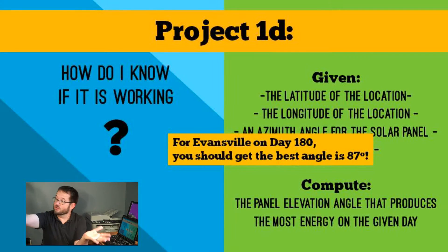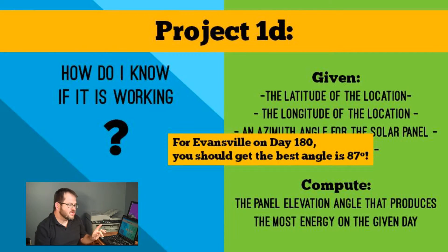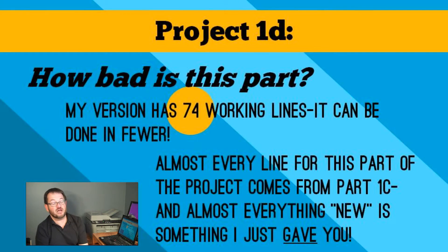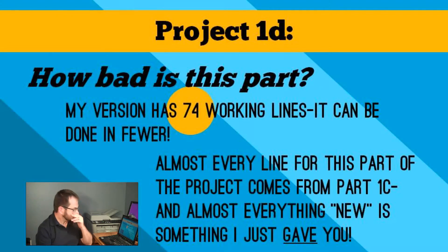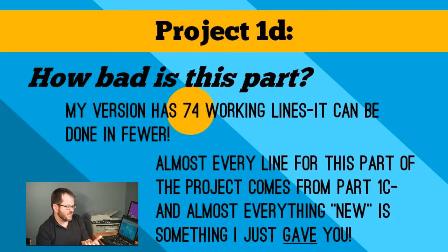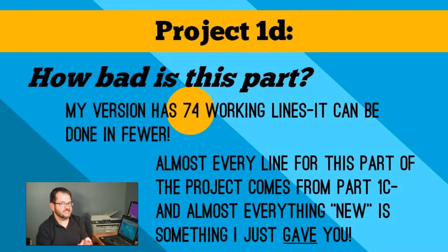Obviously at other times of the year when the sun is lower in the sky, we're going to wish the panel was tipped more. When I stripped out all the white space and comments from my version of the program, I ended up with Project 1D having 74 working lines. I have every confidence it can be done in fewer lines. Almost every single line in this part of the program came from Part 1C — there were only like five new lines compared to 1C. Honestly, Part 1D is a pretty easy part of this program. Once you have 1C working, 1D is in some ways the easiest part of the whole project.